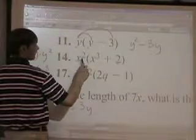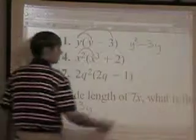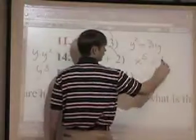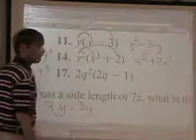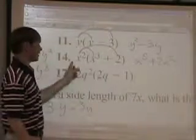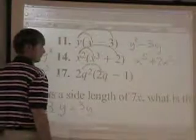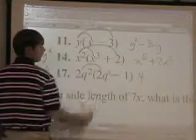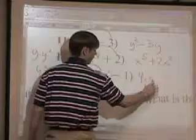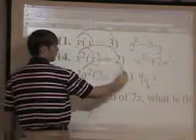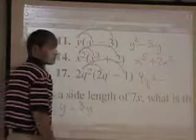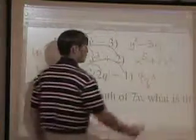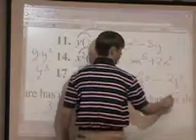Distribute on this one. What's x squared times x to the third? X to the fifth. And what's x squared times 2? 2x squared. So you get x to the fifth plus 2x squared. Next: 2q squared times 2q — 2 times 2 is 4, and q squared times q to the first is q to the third power. Minus, because it says minus. What's 2q squared times 1? Anything times 1 is just itself, so 2q squared. That's your answer: 4q cubed minus 2q squared.